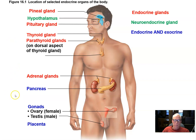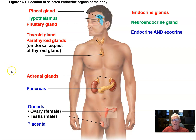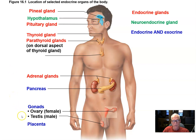Some organs have multiple functions, both endocrine and exocrine. The pancreas is largely an exocrine gland that produces digestive enzymes for your intestines, but it also has some endocrine tissue sprinkled in there, as the pancreas produces hormones like insulin and glucagon. Gonads produce the sex hormones — testosterone, estrogen, progesterone — and the placenta as well.